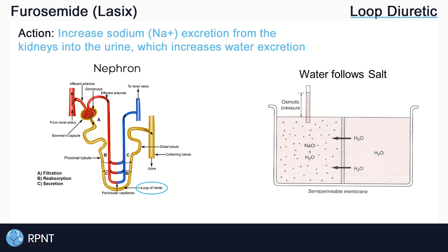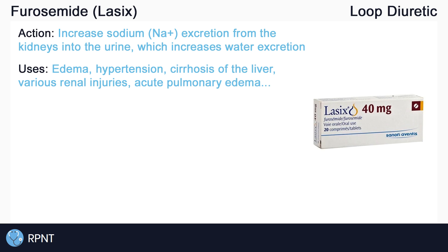There are many uses for furosemide. Furosemide is often given orally for edema to help remove excess fluid from the body. This is why furosemide is often given to clients with congestive heart failure. If we get rid of excess water, then we also decrease blood pressure by decreasing blood volume. This is why furosemide can be used to treat hypertension as well, usually in combination with other antihypertensive medications.